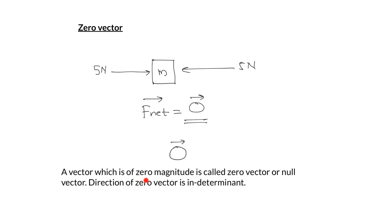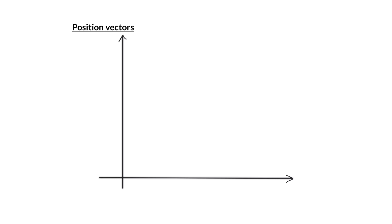Notes: A vector which has zero magnitude is called a zero vector or null vector, and the direction of a zero vector is indeterminate. Position vector is used to represent the position of an object with respect to the origin or another reference point. A vector starting from the origin up to a point A represents the position vector of point A with respect to the origin, represented as r⃗_A.